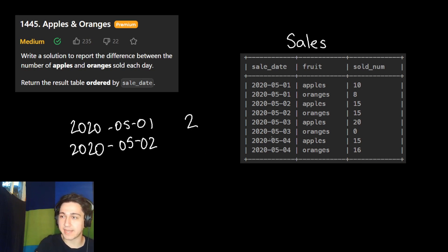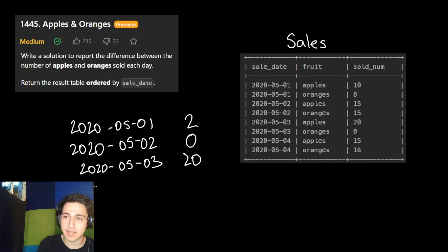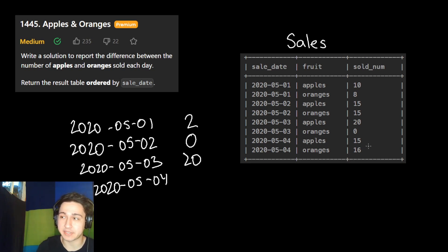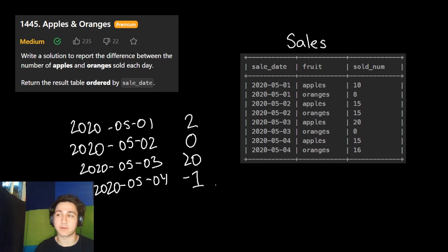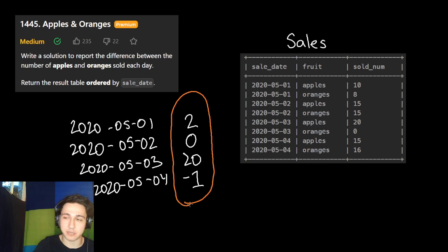On the next day, May 2nd, we sold an even amount of both — 15 apples and 15 oranges. So we're going to return zero, because there's no difference between 15 and 15. On our third day, we sold 20 apples and zero oranges, so we return 20 for this day. On our last day, May 4th, we sold 15 apples but 16 oranges, so we follow the same formula — apples minus oranges — 15 minus 16 gives us negative one. This would be our desired output: each day of sales and the difference between the apples and oranges sold.